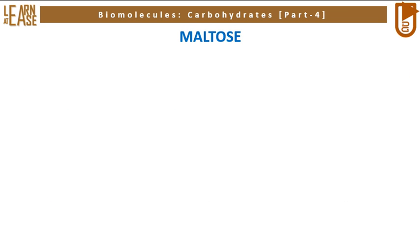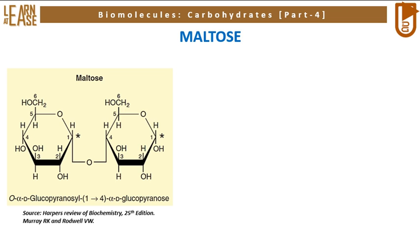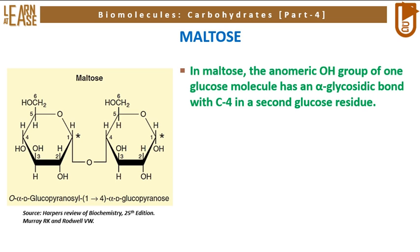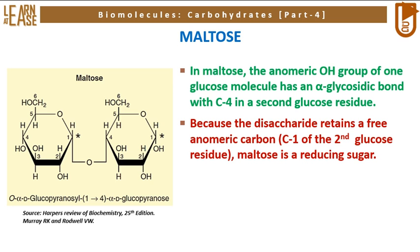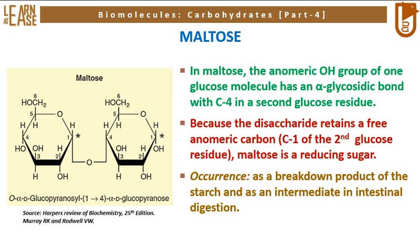Now let us understand the structure of maltose. The image on the left shows the structure of maltose. The disaccharide possesses two alpha-glucopyranose residues linked by an alpha-1,4 linkage. This structure is traditionally named as O-alpha-D-glucopyranosyl-(1→4)-alpha-D-glucopyranose. In maltose, the anomeric OH group of one glucose molecule has an alpha-glycosidic bond with C4 of a second glucose residue; thus this linkage is called the alpha-1,4 linkage. Because the disaccharide retains a free anomeric carbon (C1 of the second glucose residue), maltose is a reducing sugar. It is found as a breakdown product of starch and as an intermediate in intestinal digestion.